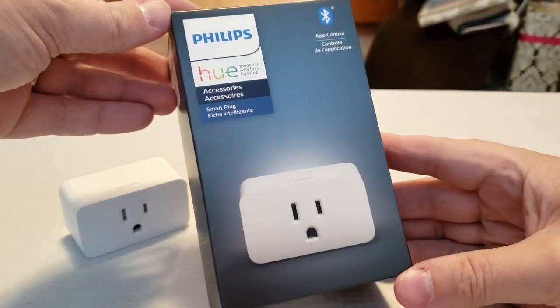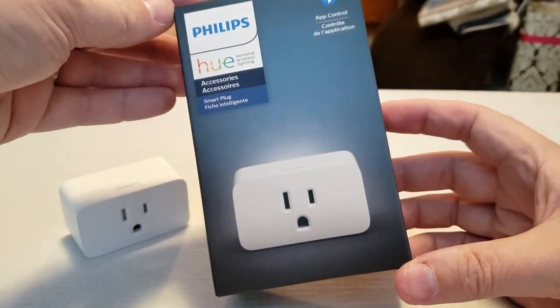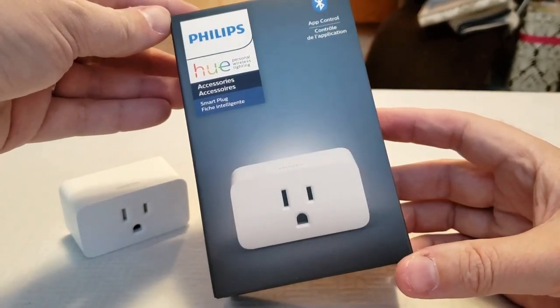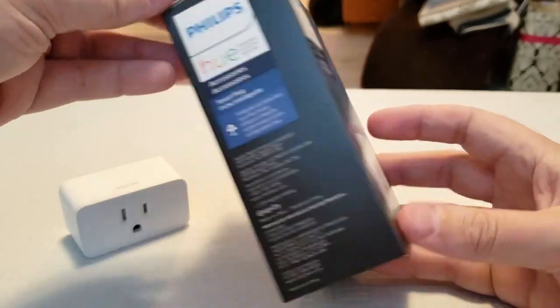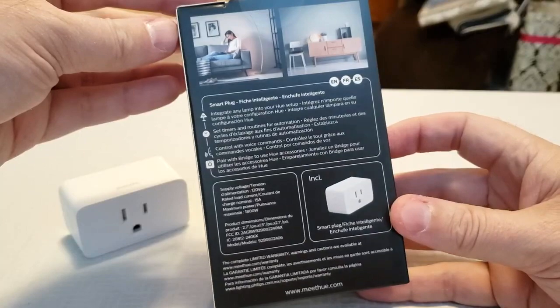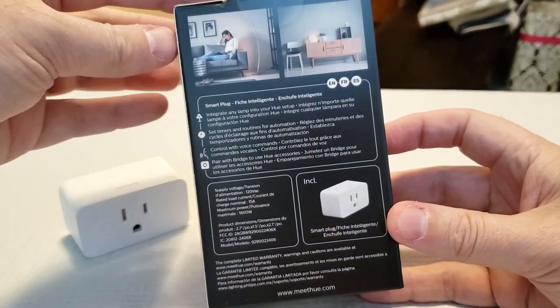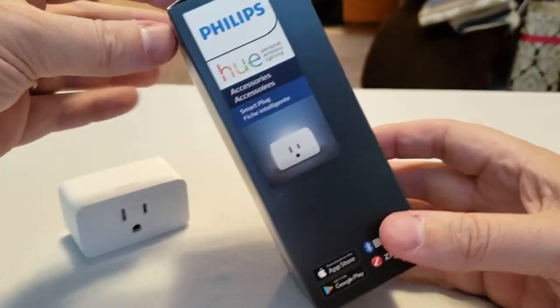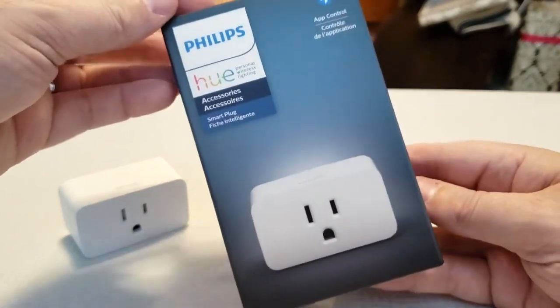Hey everyone, Leo Bond here. I'm back again today for the Best Buy Canada blog, and this time I'm taking a look at the Philips Hue smart Bluetooth plug, which is a new product from Philips Hue, the folks that are known for their different smart lights. This particular smart plug is something a little bit different from some of the other smart plugs that are out there on the market.